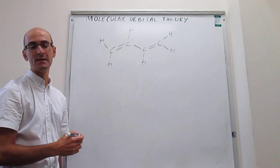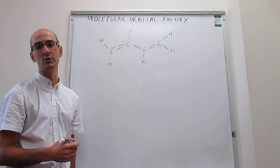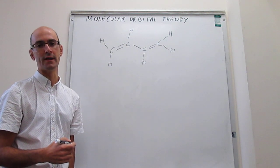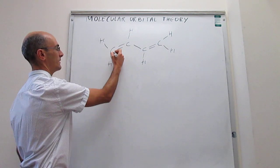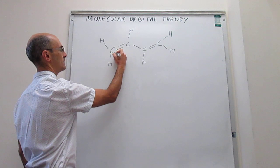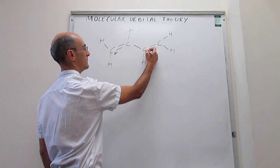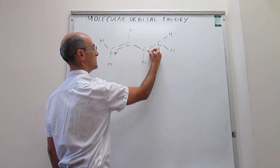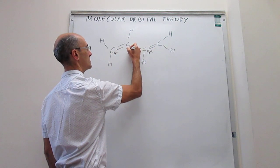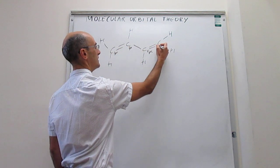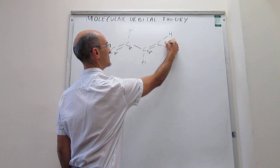Three electron groups means the electron group arrangement is trigonal planar, and that means the hybridization of each one of the carbon atoms is sp2. So you have an sp2 carbon, sp2, sp2, and sp2 — all four carbons are sp2 hybridized.